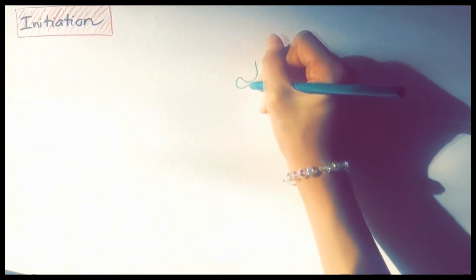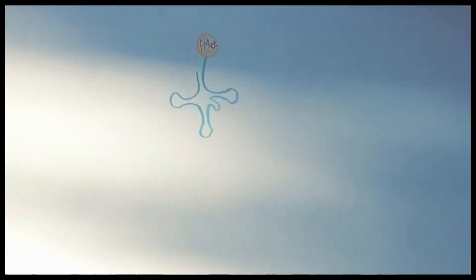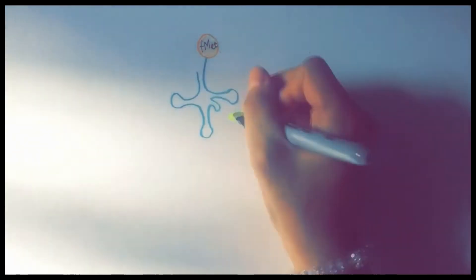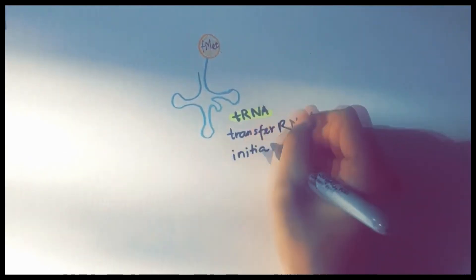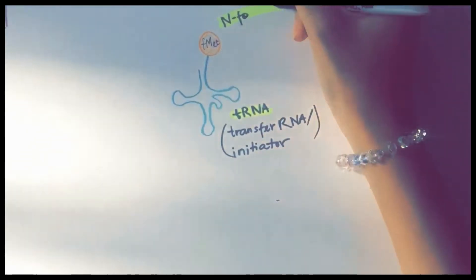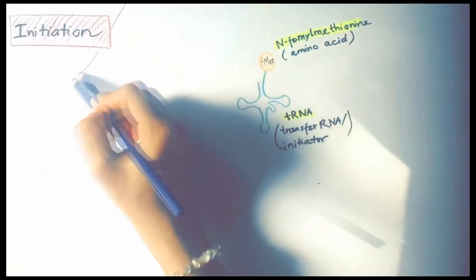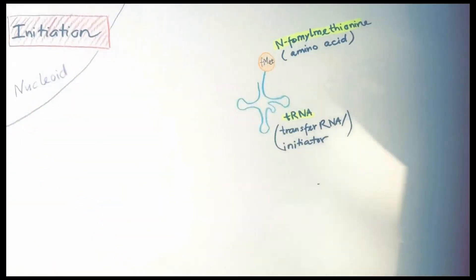During initiation, the initiator tRNA binds to the ribosomal subunits after recognizing the start codon in the mRNA. In prokaryotes, the initiator tRNA is designated tRNA-fMet, which has a formyl group attached to methionine, known as N-formyl methionine. As initiation starts, the mRNA, tRNA-fMet, and ribosomal subunits form an initiation complex.